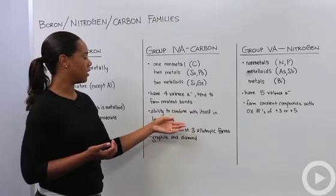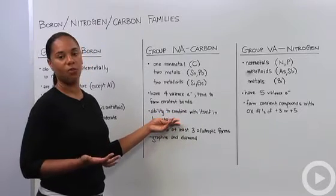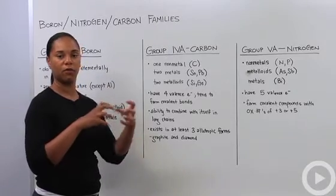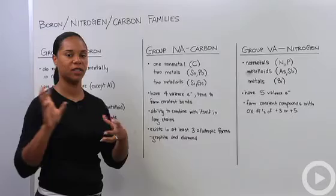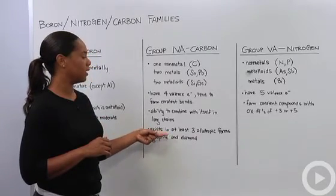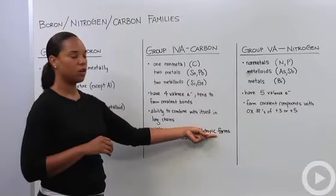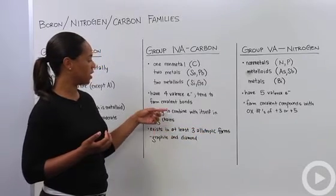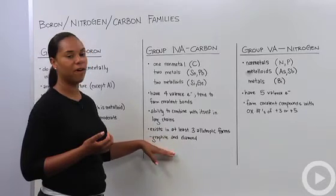Carbon's ability to combine with itself in long chains is another property which a lot of other elements do not have. Carbon can form these really long chains where it's just bound to itself and other things usually. It also exists in at least three allotropic forms. Remember what an allotrope is.